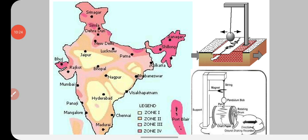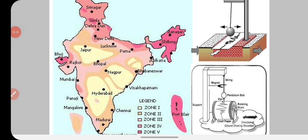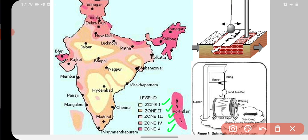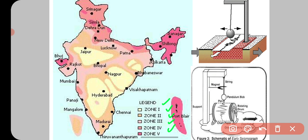Here you can see the seismic zone of India. Aap dekh sakte hain ki yeh light yellow zone hai — Zone 1, matlab sabse low risk zone hai. Zone 2, Zone 3, Zone 4, aur Zone 5 mein divide kiya gaya hai. Aur aap dekh sakte hain ki jo Zone 5 hai, woh sabse zyada high risk ki seismic zone hai — wahaan par earthquake ke aane ki possibility maximum hai.